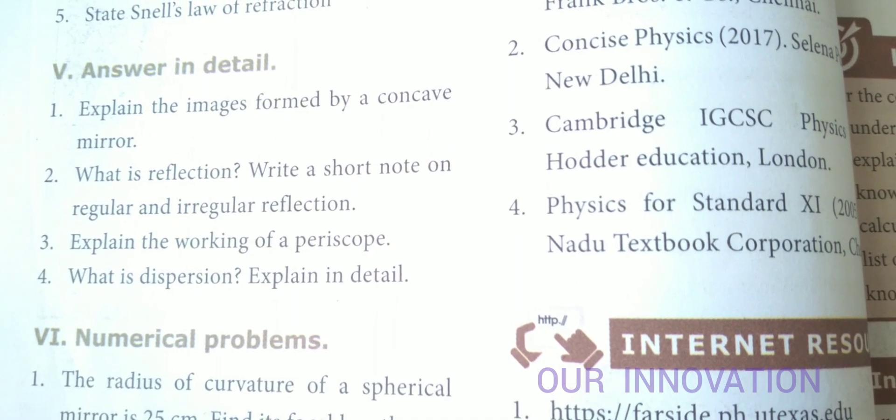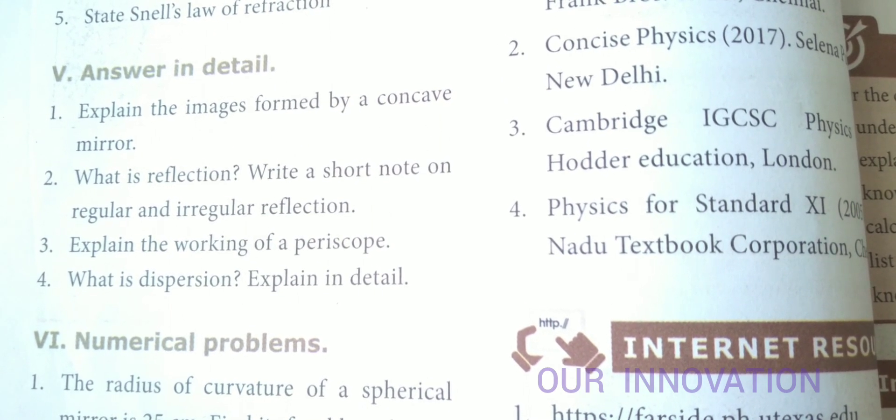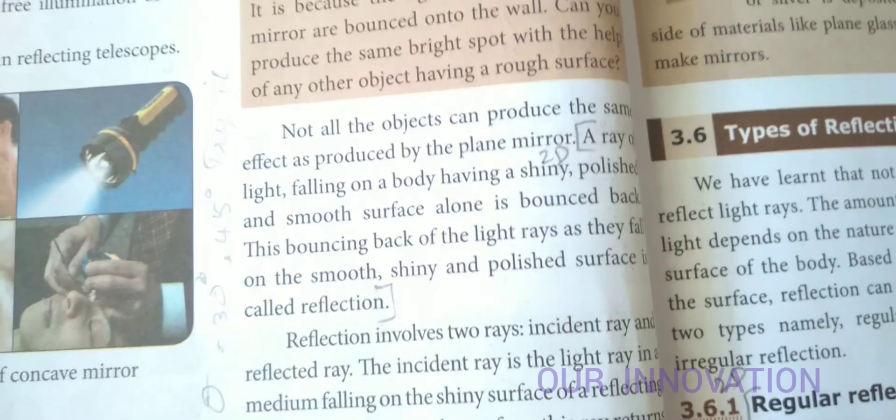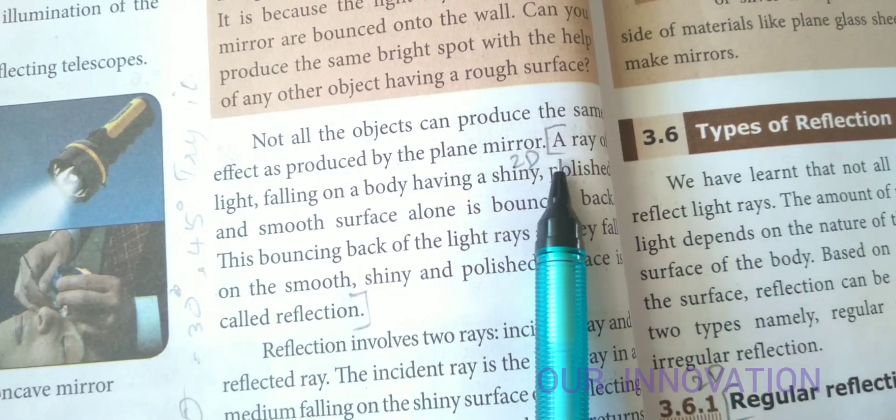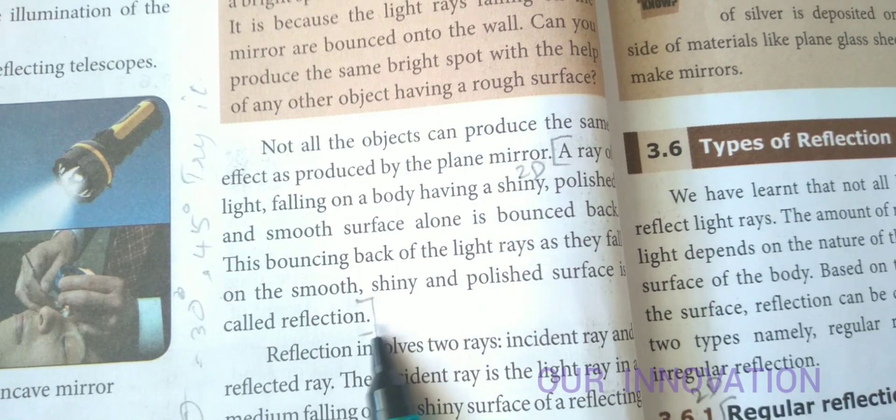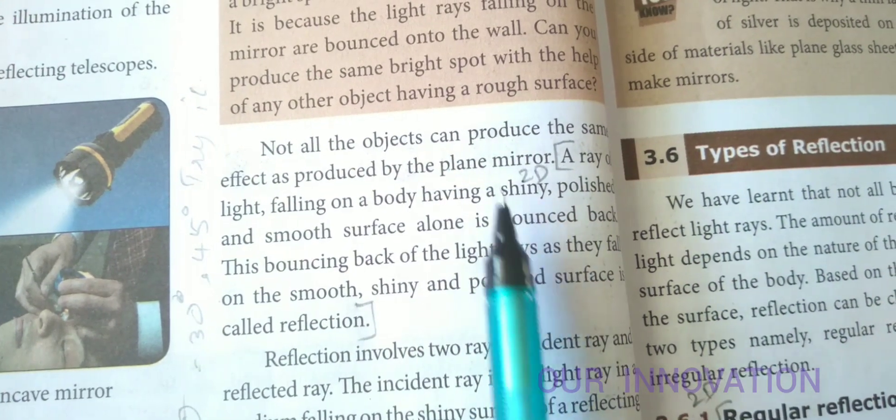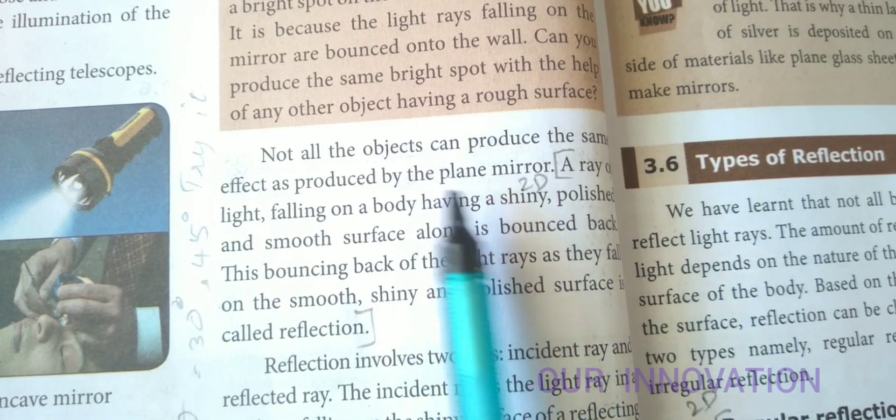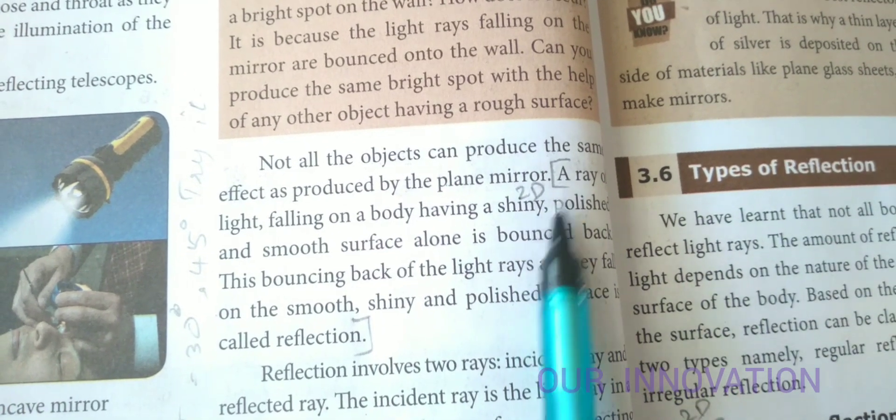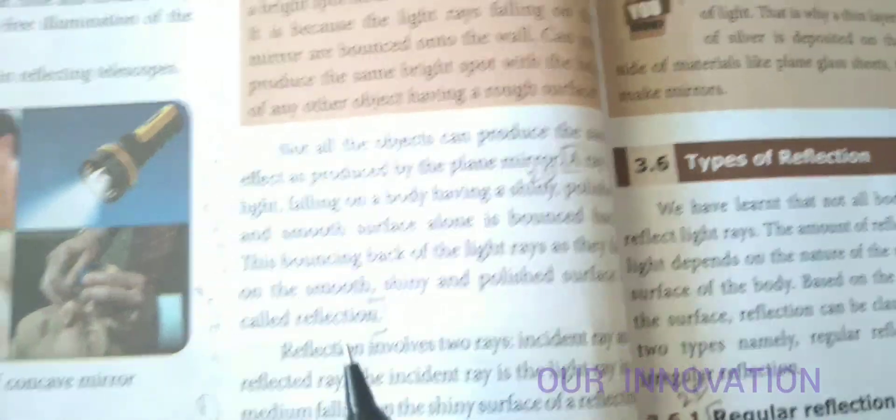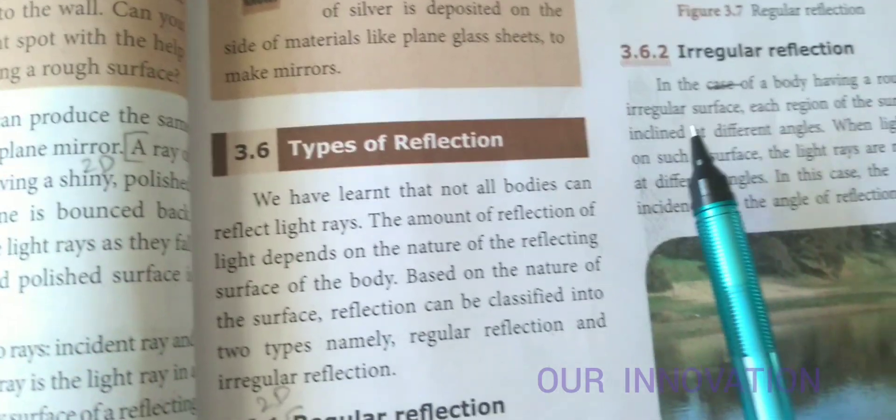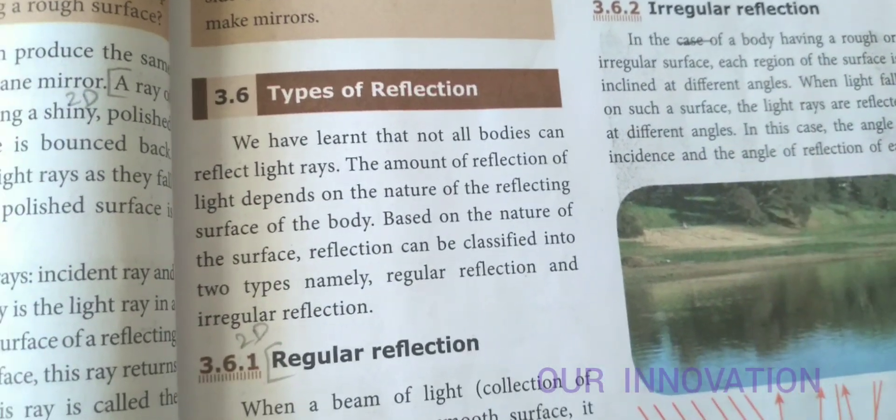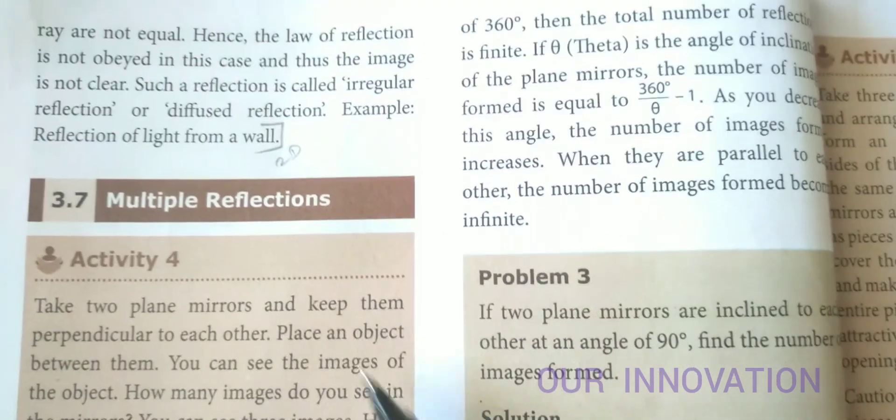What is reflection? Write a short note on regular and irregular reflection. Page number 26. What is reflection? Here, mark it from here until end of this. This is the definition, heading one. In the points note, mark it from here till end of this. For regular reflection, put the heading. You have to mark this whole paragraph. And then you want to write irregular reflection, this whole paragraph. You have to finish up to here.